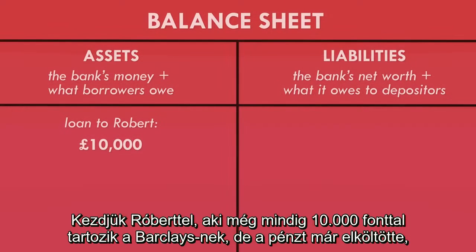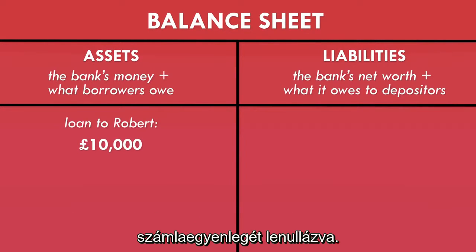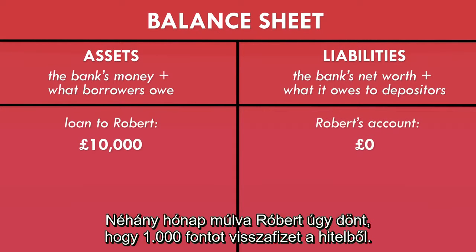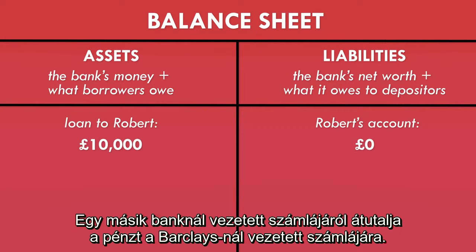So let's see exactly how money is destroyed when a loan is repaid. Let's start with Robert, who still owes £10,000 to Barclays, but has spent the money, leaving his bank balance at zero. After a few months, Robert decides to pay down £1,000 of the loan. He transfers the money from a bank account with another bank to his bank account at Barclays.